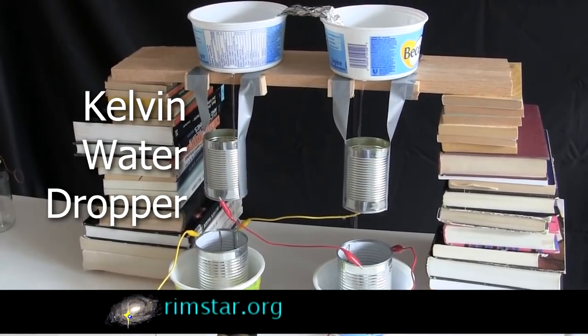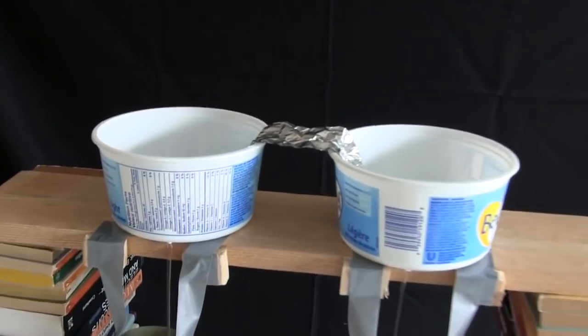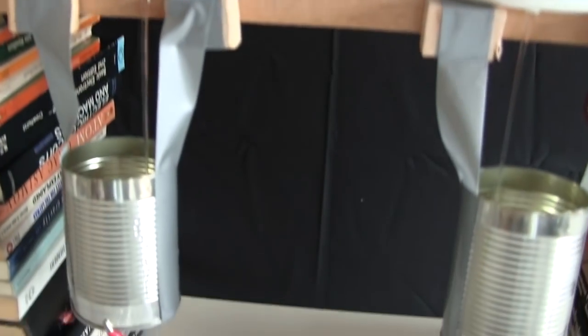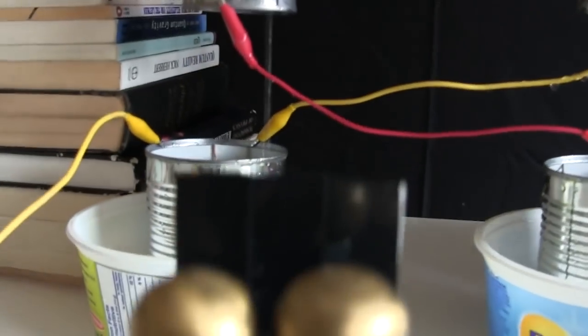Hi gang! This is the Kelvin Water Dropper, and it's one way to produce electricity from falling water. Water falls from these two containers up here, down through these two cans, and into these cans. The result is a spark every now and then down here.